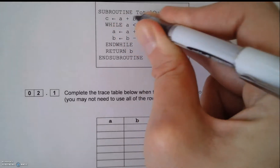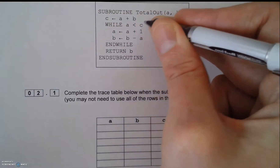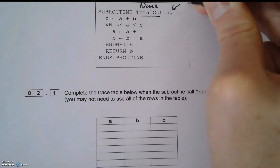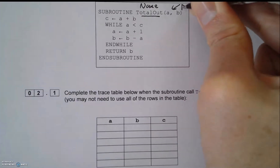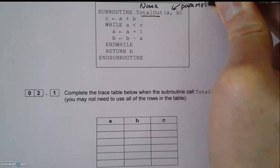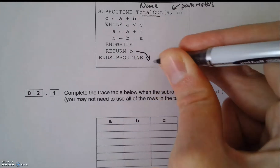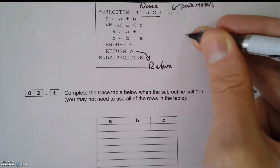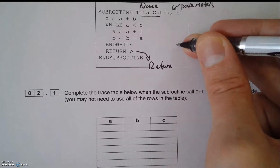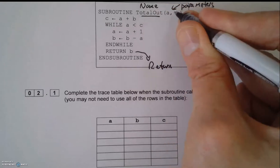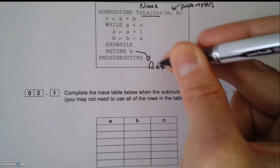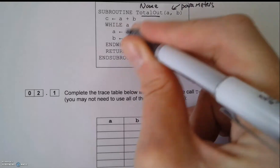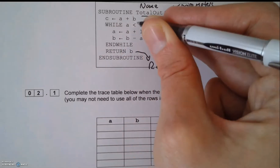It's a subroutine — that's standard pseudocode. The subroutine is called 'totalout'. The values being passed into it are the parameters, and then I've got my return. This would indicate that this is a function. Just to point that out: these three things — its name, the parameters being passed in, and the return — are something called its interface.